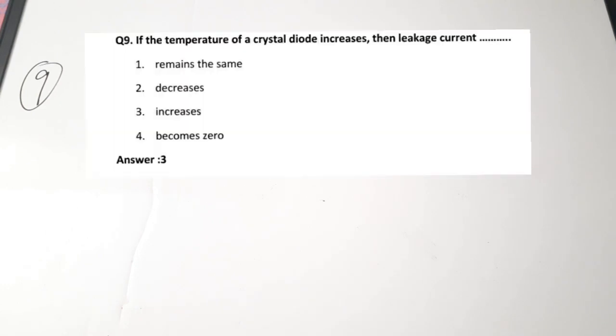The ninth question: if the temperature of a crystal diode is increased, the leakage current dash. It will increase, because a crystal diode uses a semiconductor material. When we increase the temperature of a semiconductor, resistance is reduced and the current increases. So the leakage current will increase. Correct answer is 3.